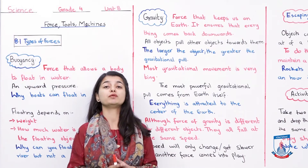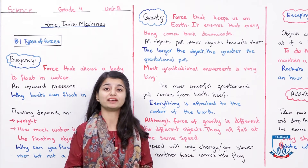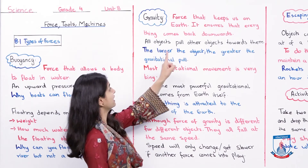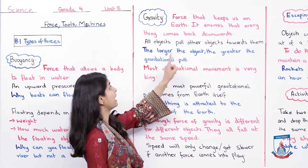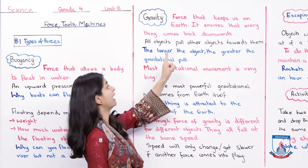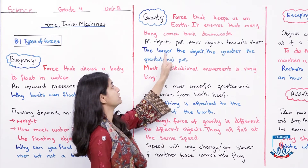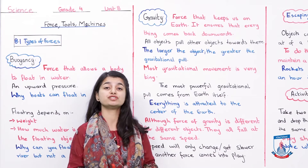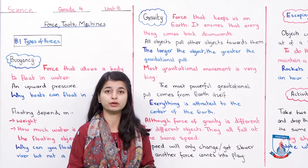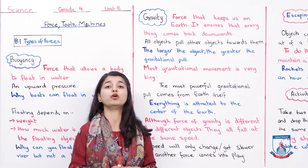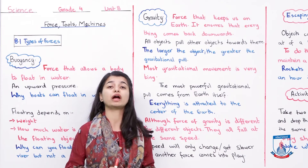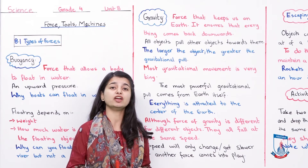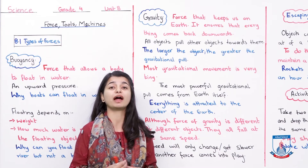The second force we will study is gravity. What is gravity? Gravity is the force that keeps us on Earth. It ensures that everything comes back downwards. All objects pull other objects towards them. Gravity is a downward force — because we are standing on the ground and everything is touching the ground, all objects attract other objects.